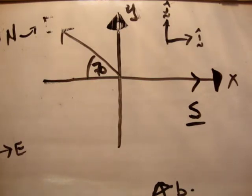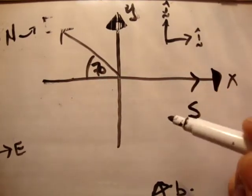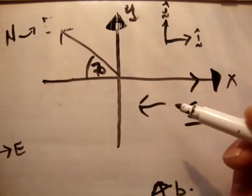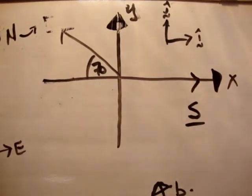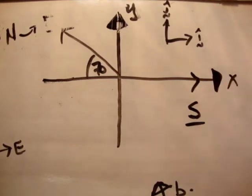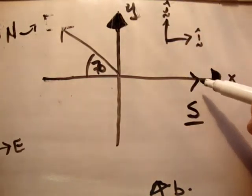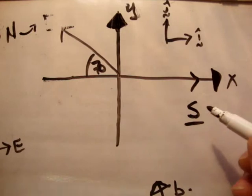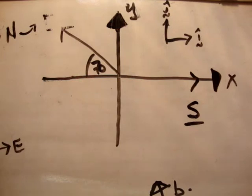Now, vector s is along the positive i-hat axis. There's a bit of a discrepancy — it's along the x-axis but in the i-hat direction. For example, it could be on the x-axis in the negative i-hat direction if it was facing this way. Anyway, s is along the x-axis. We don't know what magnitude the vector s is, so we'll just draw a vector of any length.